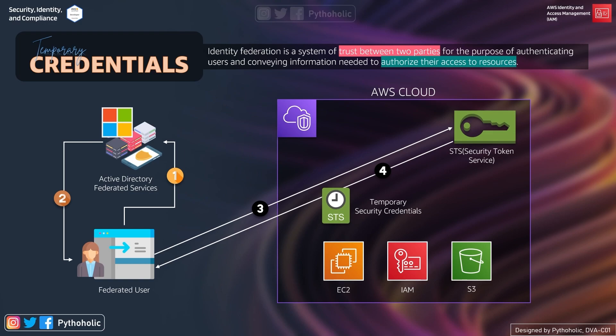Next, the STS service returns a set of temporary security credentials for users who have been authenticated via a SAML authentication response. This operation provides a mechanism for tying an enterprise identity store or directory role to role-based AWS access without user-specific credentials or configuration. That is why you get access but don't need to be an IAM user. After receiving the temporary credentials, the user will have federated access to AWS services.